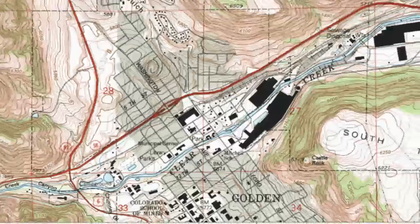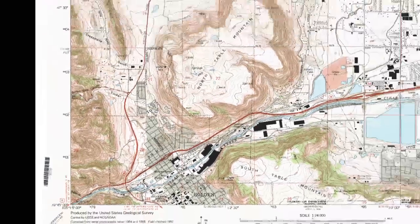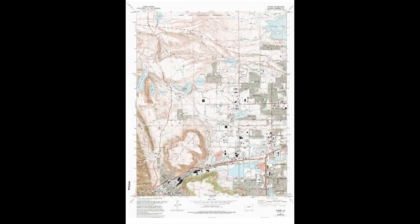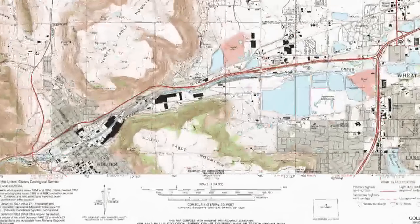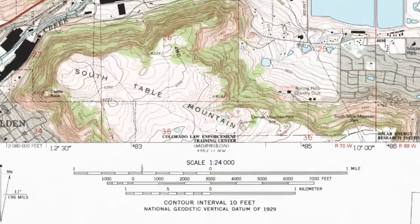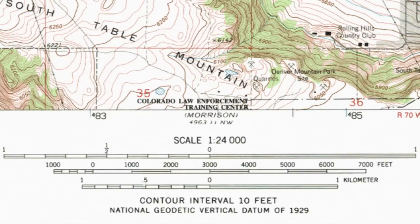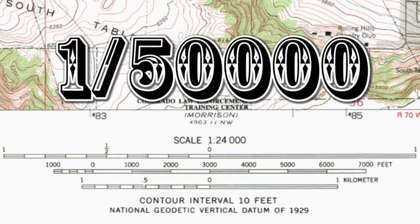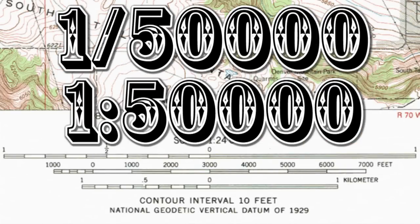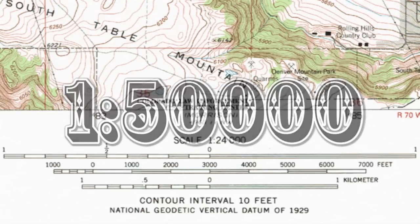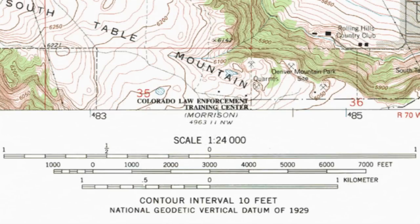A map is a scaled-down model, and so we turn our attention to the scale indicators at the bottom center of the map. There are three types of scale indicators possible: fractional, ratio, and bar scales. Here we see a ratio scale and bar scales.